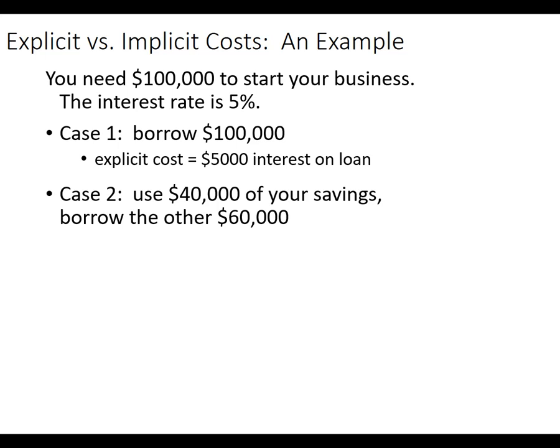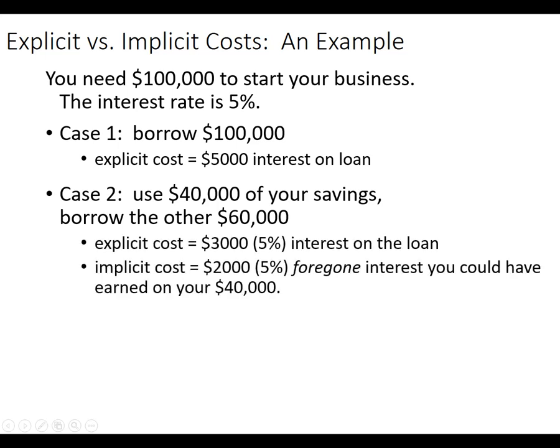Now there's an implicit cost. What could you have been doing with that $40,000? You could have put it in the stock market or the bank. Assuming you could get 5% interest, they end up being the same. The explicit cost will be $3,000 — that's 5% of $60,000. The implicit cost will be $2,000 — that's 5% of $40,000. It's going to be equal no matter how you do it. It just depends on how you want to do it.